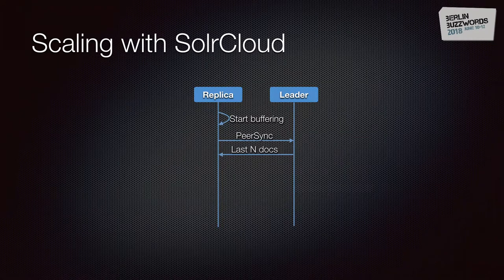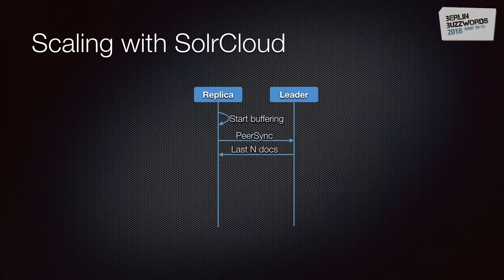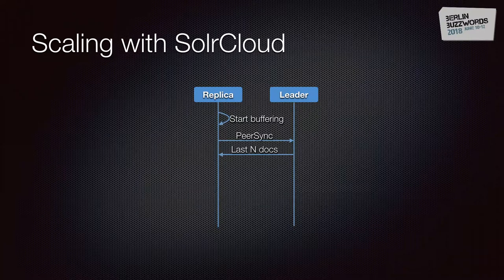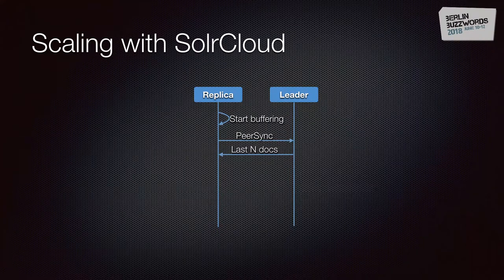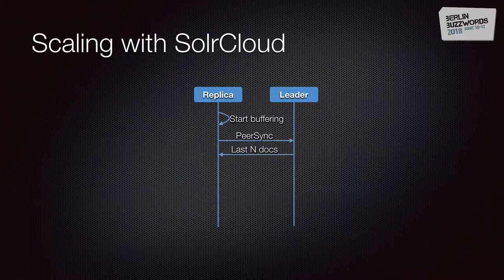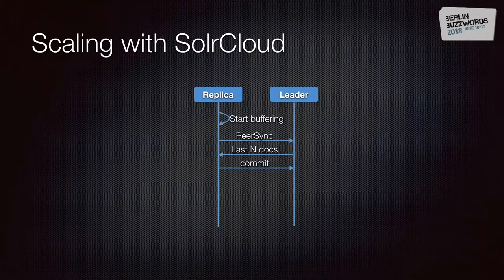The replica starts the first phase of recovery called piercing. Piercing is where the replica asks the leader which documents it missed, identifying the last document it received. The leader responds with how many documents the replica is missing. If that number is small — by default less than 100 — the leader starts sending those documents individually to the replica.